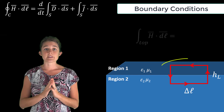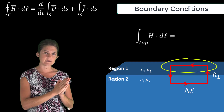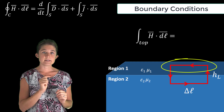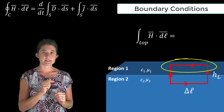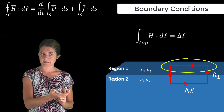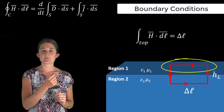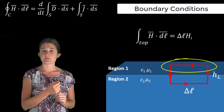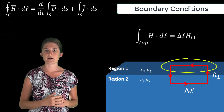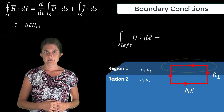Let's look first at the top edge of the loop. Since the edge is parallel to the surface, the integral of H dot dl is equal to the length of the edge — we'll call it delta l — times the part of the magnetic field in region one that is tangential to the surface, which we'll call H_t1.